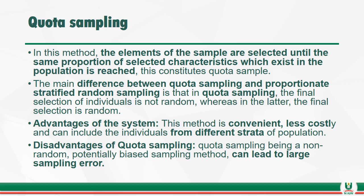In quota sampling, the elements of the sample are selected until the same proportion of selected characteristics which exist in the population is reached. The main difference between quota sampling and proportionate stratified random sampling is that in quota sampling the final selection of individuals is not random, whereas in proportionate stratified sampling the final selection is random. Advantages include that the method is convenient, less costly, and can include individuals from different strata of the population. The disadvantage is that being non-random, it is potentially biased and can lead to a large sample error.